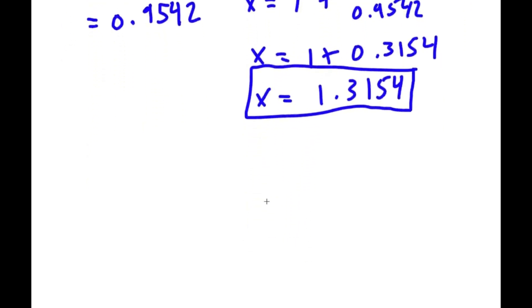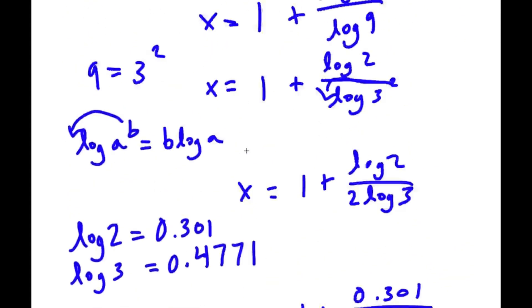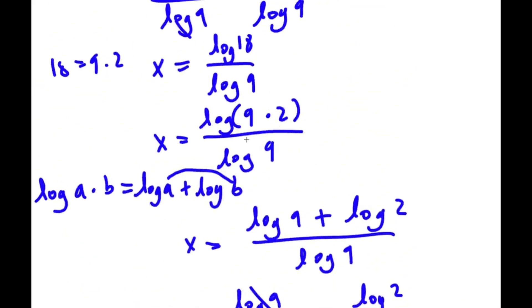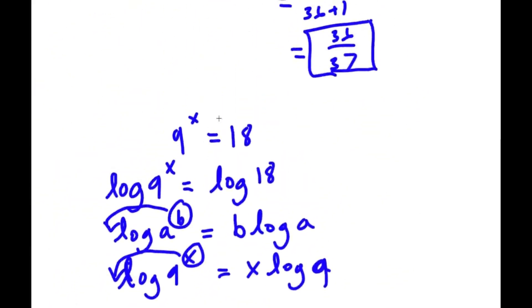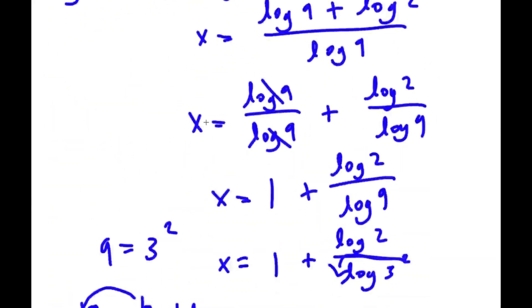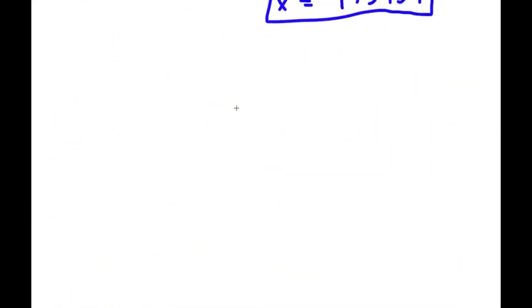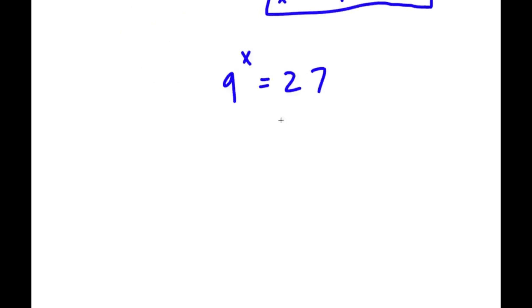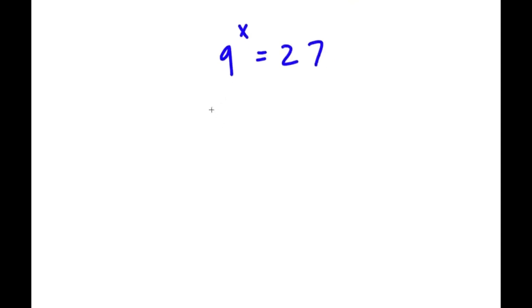Now I'm going to give you guys a similar problem, but which is much easier and doesn't require any logarithms. Our original problem was 9 to the power of x is equal to 18. Now I'm going to give you guys 9 to the power of x is equal to 27. So pause the video and try to solve this problem. Alright, so assuming you guys paused the video and tried, we have 9 to the power of x equals 27.